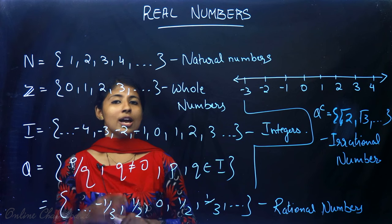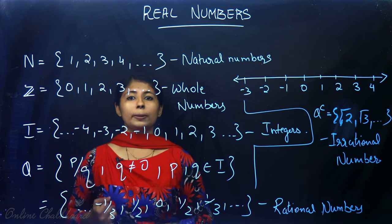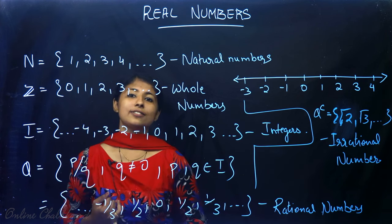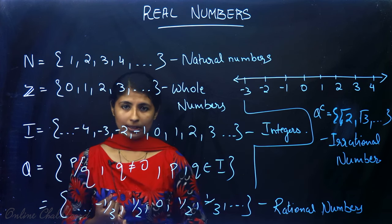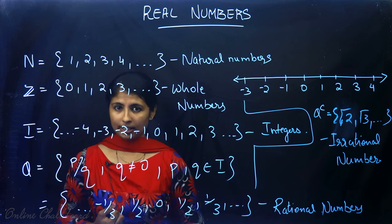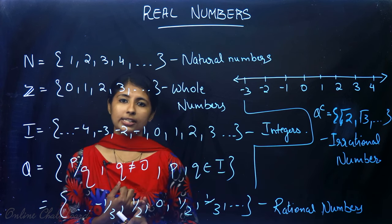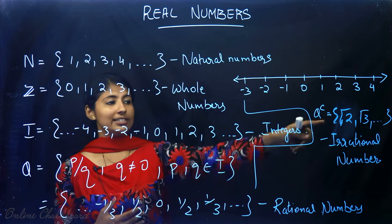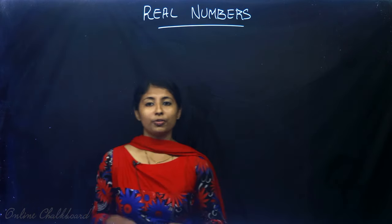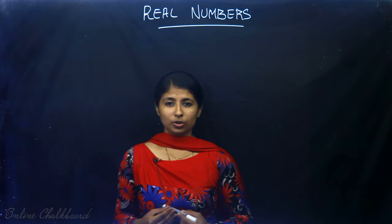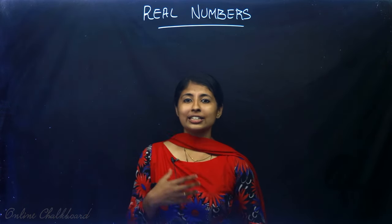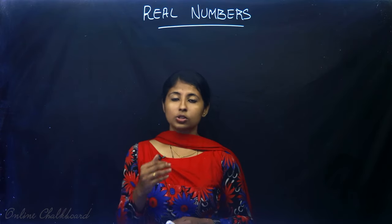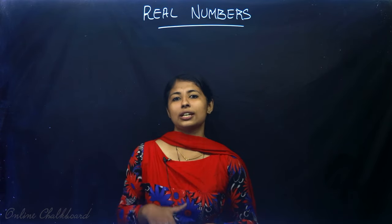From this chapter we will be discussing Euclid's division algorithm, the fundamental theorem of arithmetic, and how to prove that certain numbers are irrational. Before we get into Euclid's division algorithm, let's understand what Euclid's division lemma is.